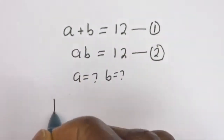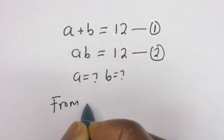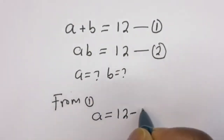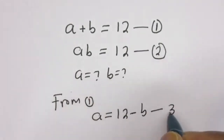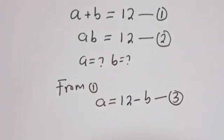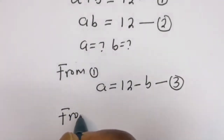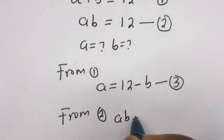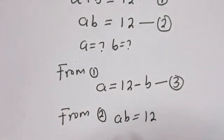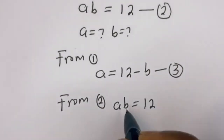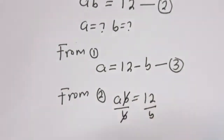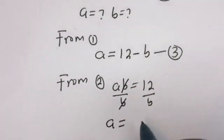From equation 1, a is equal to 12 minus b — let's call this equation 3. And from equation 2, a times b equals 12. Let's divide both sides by b, so a is equal to 12 divided by b.